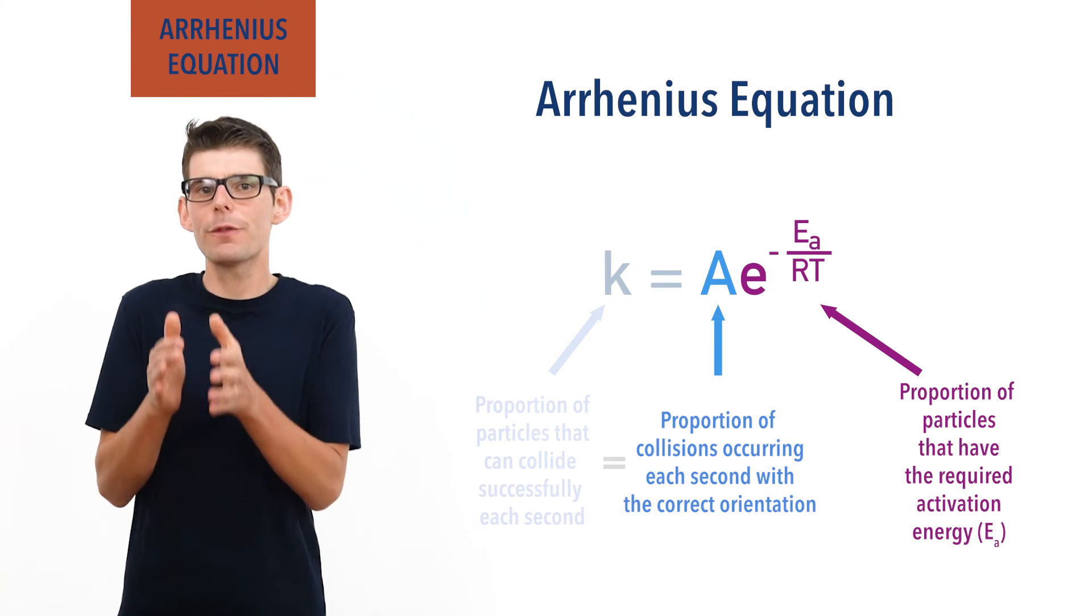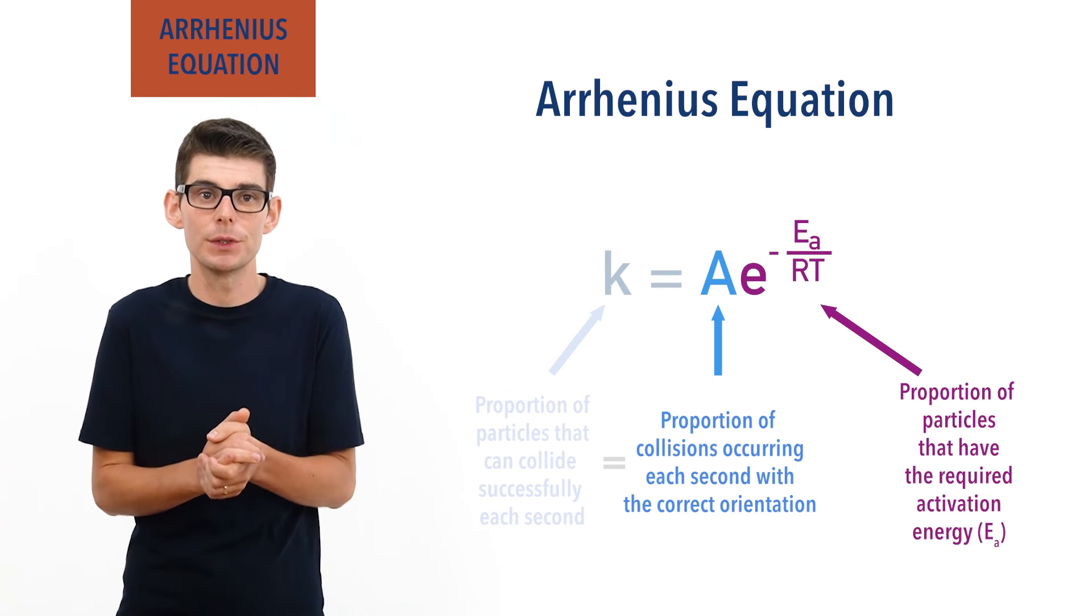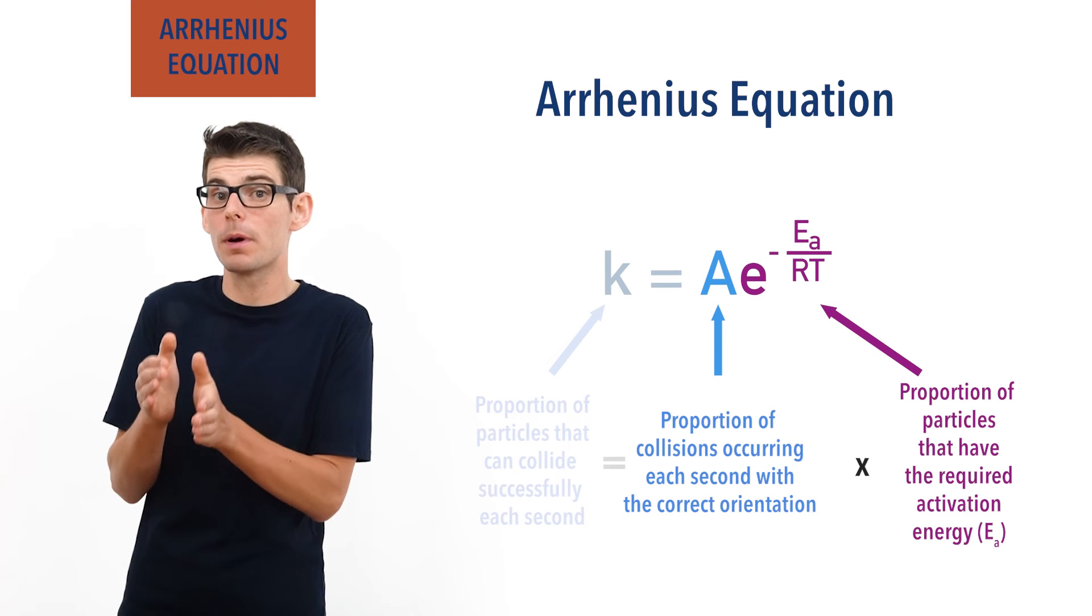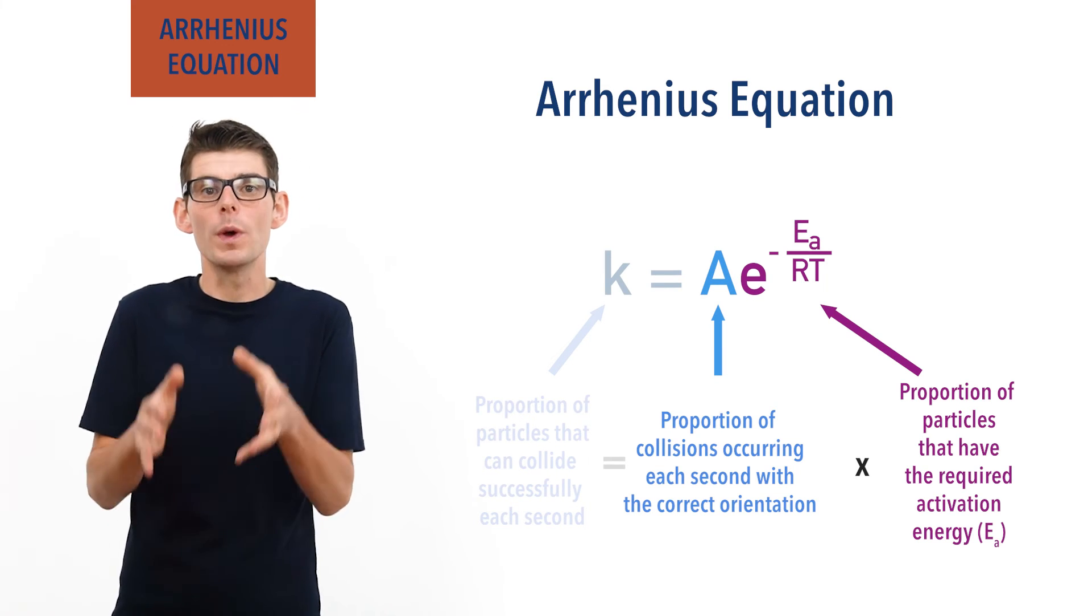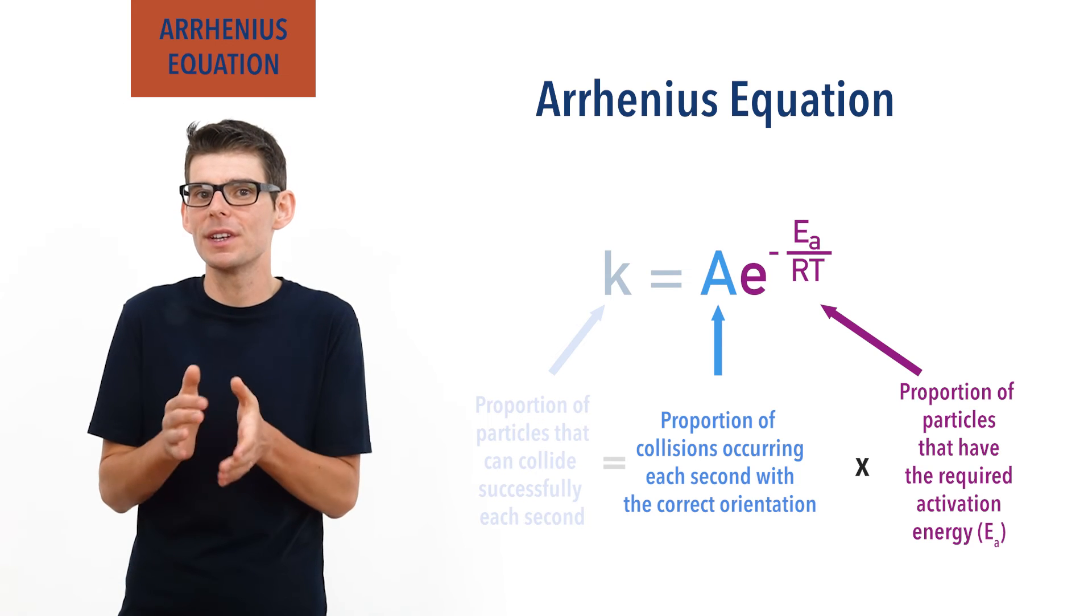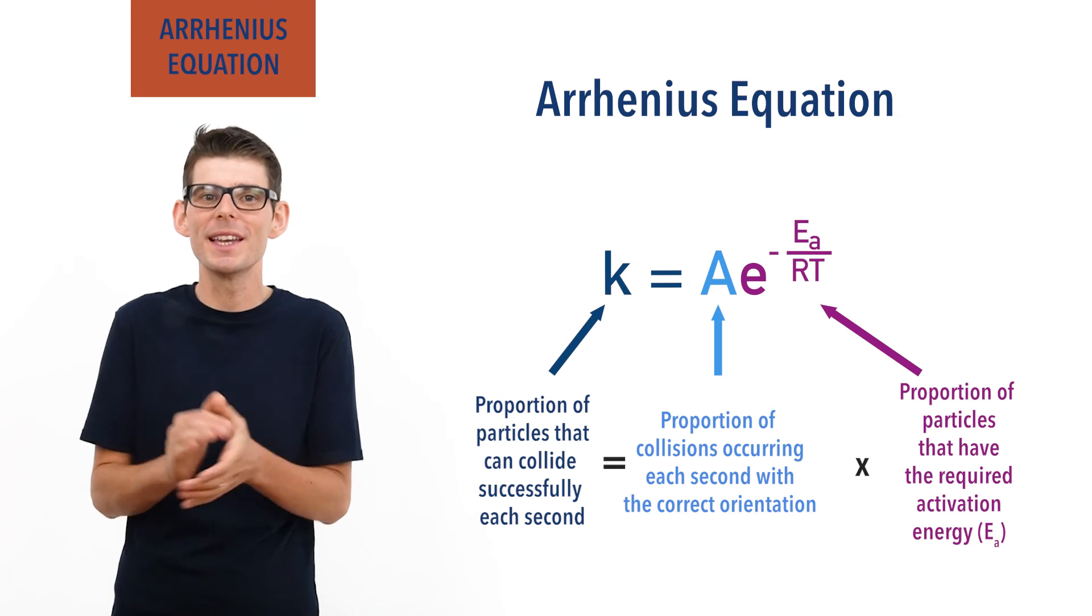Therefore, if we times the proportion of collisions happening with the correct orientation per second by the proportion of particles in the system that have the required activation energy, we get the proportion of successful collisions that can occur per second. Hopefully you're with me at this point.